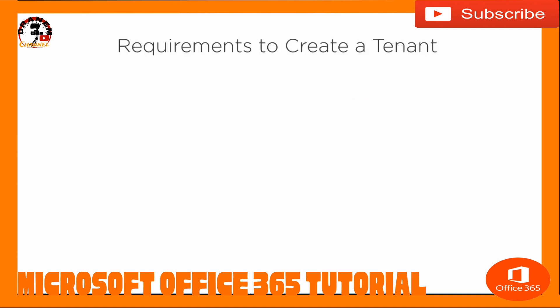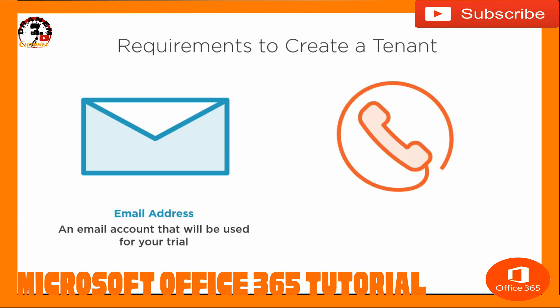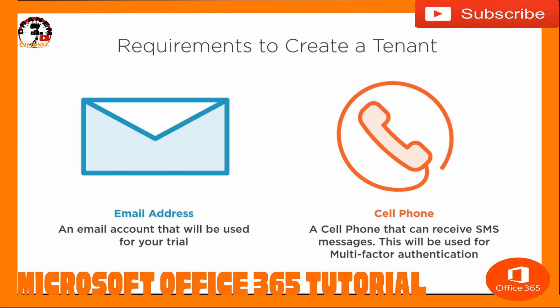What about our requirements? For requirements to create a tenant, we've got two of them — they're really straightforward. The first one is we're going to need an email address, basically an email account we're going to use for our trial. It's not part of Microsoft; it has to be our own — it could be at Outlook.com or on-premise. The second thing we're going to need is a phone. We need our cell phone so we can receive SMS messages, which will be used for MFA multi-factor authentication. We need the code to authenticate ourselves and get our domain up and running — basically, we're proving we're not a robot.